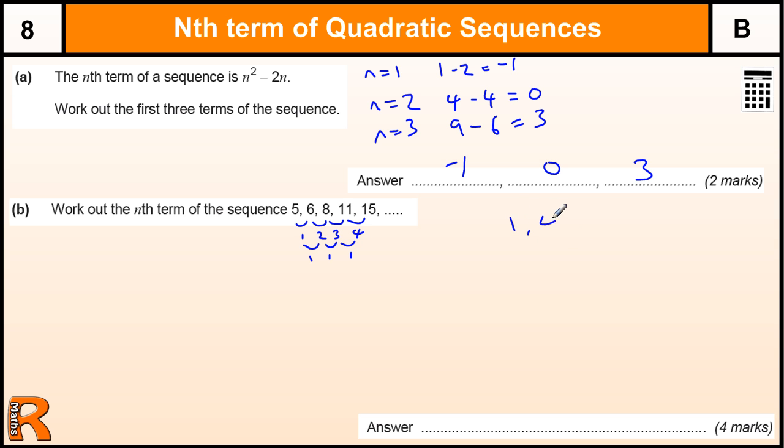Our standard quadratic sequence 1, 4, 9, 16, 25, that goes up by 3, 5, 7, 9. And the common difference there is 2, and that's the sequence n squared.